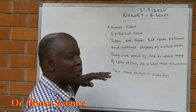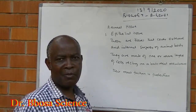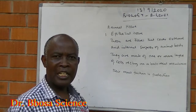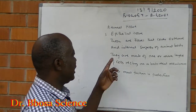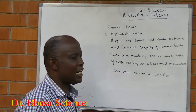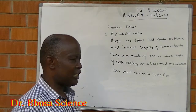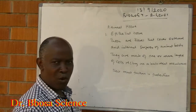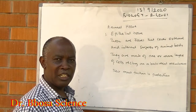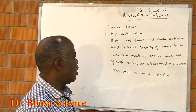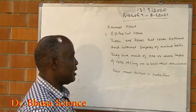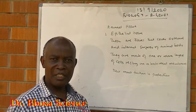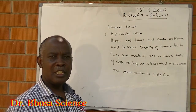The first animal tissue we are going to look at is epithelial tissue — some people call it epithelium. These are tissues that cover external and internal surfaces of the animal body. They are made of one or more layers of cells resting on the basement membrane. Their main function is protection.